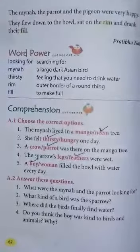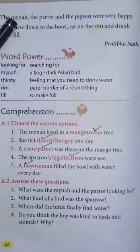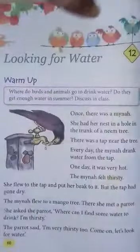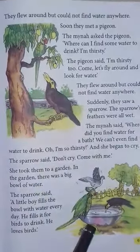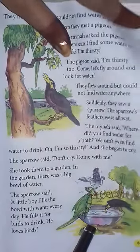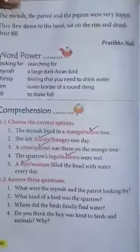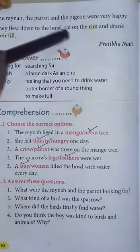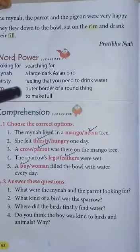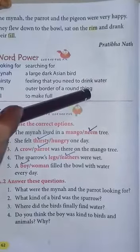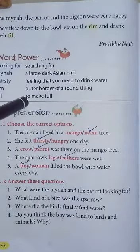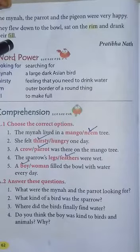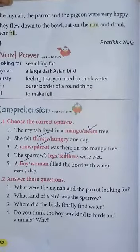The mina, the parrot, and the pigeon were very happy. The three birds flew down to the bowl, sat on the rim — 'rim' means the outer border of a round thing — and drank their fill. 'Fill' means to make full, so they fulfilled their thirst.